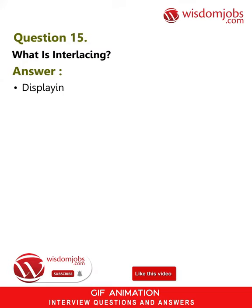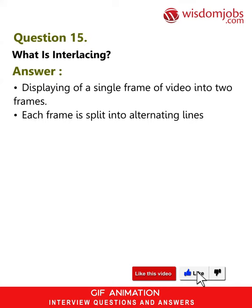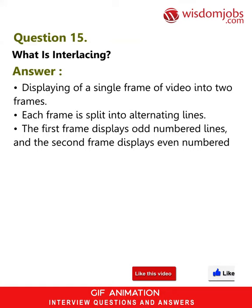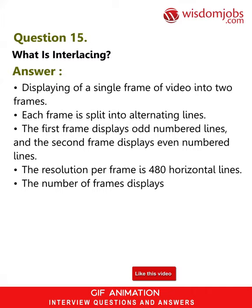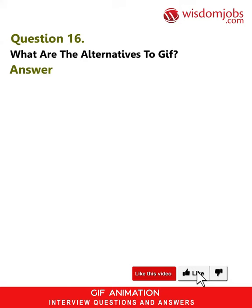Question 15: What is interlacing? Answer: Displaying of a single frame of video into two frames. Each frame is split into alternating lines. The first frame displays odd-numbered lines and the second frame displays even-numbered lines. The resolution per frame is 480 horizontal lines. The number of frames displayed per second would be 30.